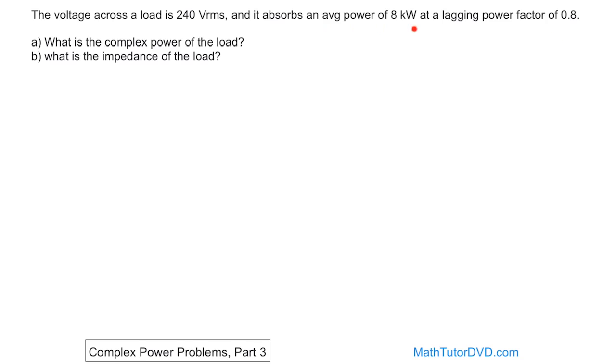You're given the average real power, which is basically P. Remember P and Q, this is basically P. And you're asked two questions. What is the complex power of the load? Second question is what is the impedance of the load? So let's just focus on the first one. What is the complex power?